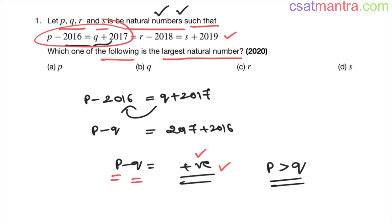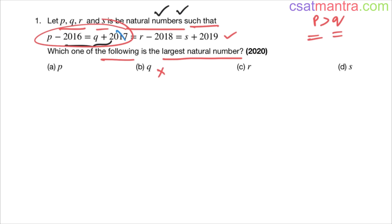So we got p is greater than q. That means q cannot be our answer — it cannot be the largest natural number because it is lesser than p. So we are done with q. Now let's take p minus 2016 equals r minus 2018.